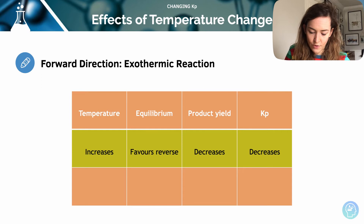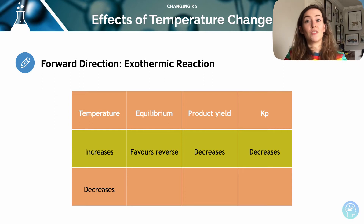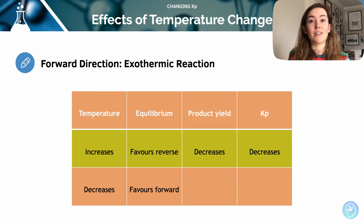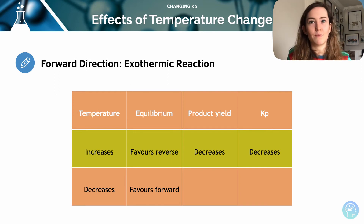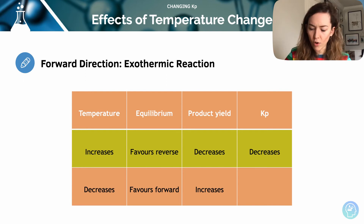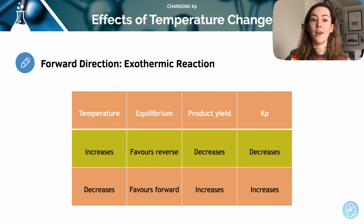So let's look at what happens if it shifts forwards. If the forward reaction is exothermic and we decrease the temperature, it's going to want to oppose that change by warming up, so by favouring that forward reaction. Remember, I said in the previous lesson, using the term 'favours' — you need to check your exam specification as to whether that's allowed. Often you have to say it shifts to the forward reaction, so just double check that. And then if we favour the forward reaction, we're going to get an increase in our product, and Kp moves with that, so it's going to increase.